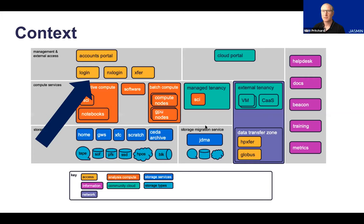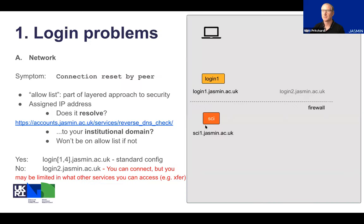In terms of a context diagram, we're talking about the login nodes — the yellow normal login nodes — and next to that we've got the NX login nodes, which I'll mention for the fourth sub-topic. That's how you access most of the other resources within Jasmine, so it's quite important to be able to do these right. First, let's talk about some network issues.